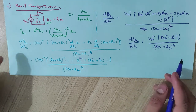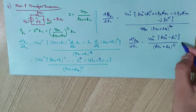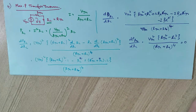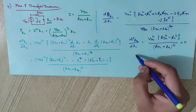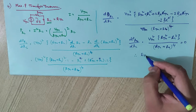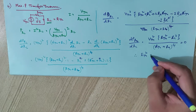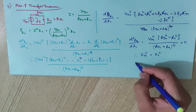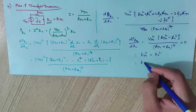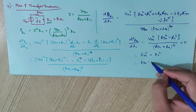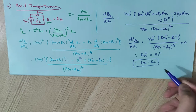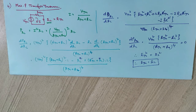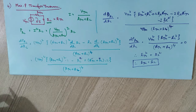The first derivative should be equal to zero for maximum power. Setting it to zero, Vth² and other terms cancel, and finally it remains that Rth² = RL², which gives Rth = RL. That means the load resistance should be equal to the Thevenin resistance — then only we will get maximum power transfer.